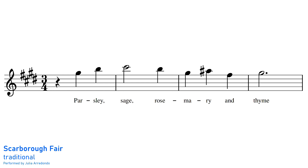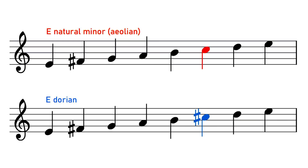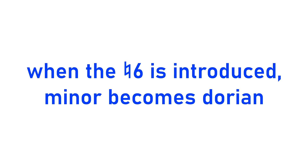For example, in the traditional folk tune Scarborough Fair, when we reach the lyric Rosemary and Thyme, we can hear the Dorian raised sixth, lending the tune a whimsical, bright sound. The sixth note of the Dorian scale really is the most significant of its seven notes, as it's the one note that differentiates it from the more typical natural minor scale. So when that sixth note is first introduced in a piece of music, it can be a particularly ear-catching moment, as it's the moment that the song goes from being in plain old minor to being in Dorian.